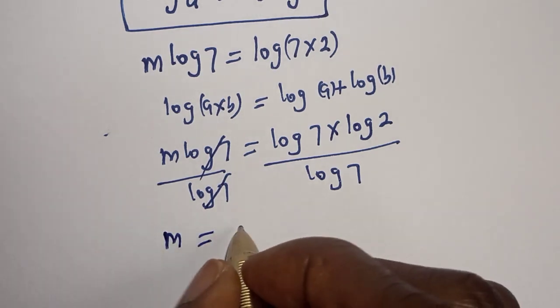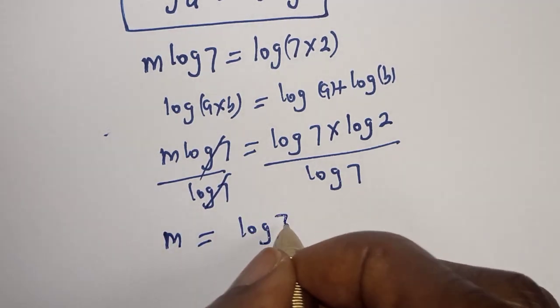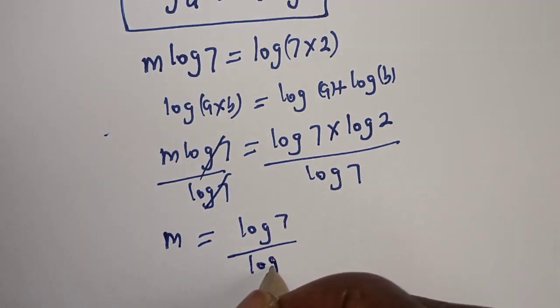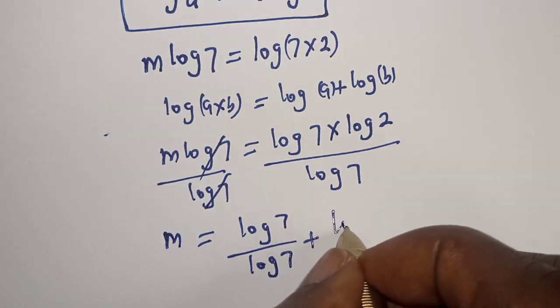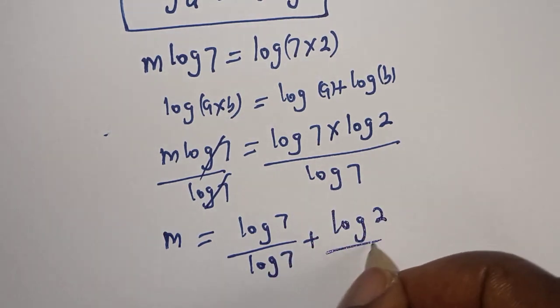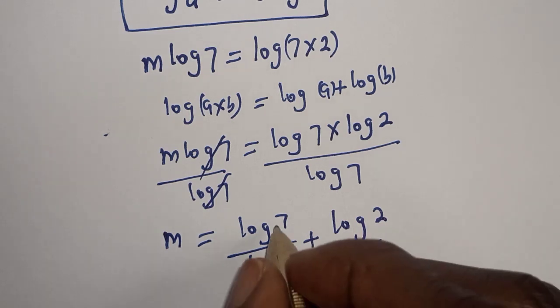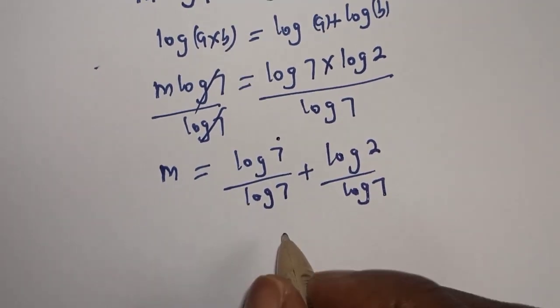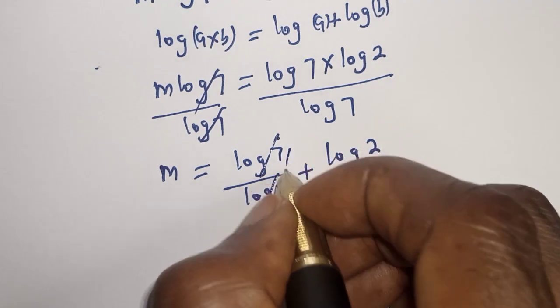m is equal to log 7 over log 7 plus log 2 over log 7. This will cancel this.